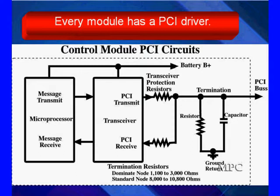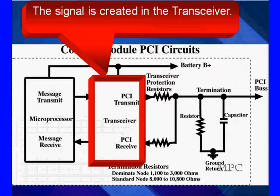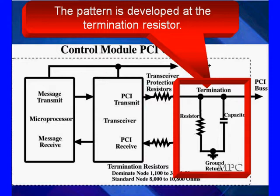Every one of these modules has a PCI driver like this. We look out here we see a variable pulse width signal. Inside of here the signal is created in the transmit side of the transceiver. Transceiver is a combination transmitter-receiver. That's why it lives in single communications, single box. And the pattern that's developed by this transceiver is developed across a termination resistor. And we have different values. Dominant nodes can take control of it. They have low values. Standard modes which will relinquish control to a dominant node have a higher resistance.